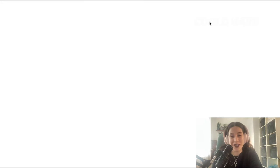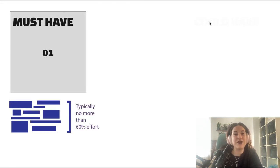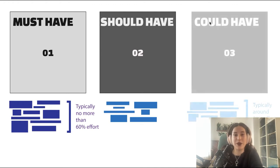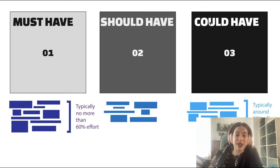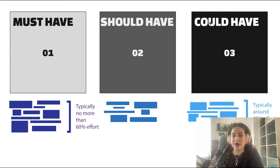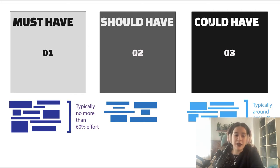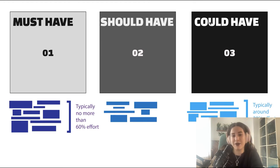This presentation splits recommendations into three categories. Must-haves are no more than 60% of the effort — things you absolutely should be doing, and if you aren't, you're probably late to the party and should start. Should-haves involve about 20% of effort, might be a little new depending on where you are in your data science journey, require no coding experience, and will create a really big impact — ensuring you stand out from the competition.